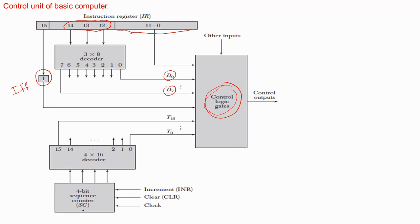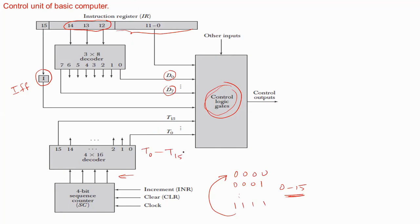The four-bit sequence counter can count in binary from 0000 up to 1111 and back to 0000, so it counts from 0 to 15. The outputs of the sequence counter are decoded into 16 timing signals t0 through t15, and these timing outputs are also applied to the control logic gates. The sequence counter is incremented with every positive clock transition unless the clear input is active. When the clear input is active, the sequence counter is cleared to all zeros.